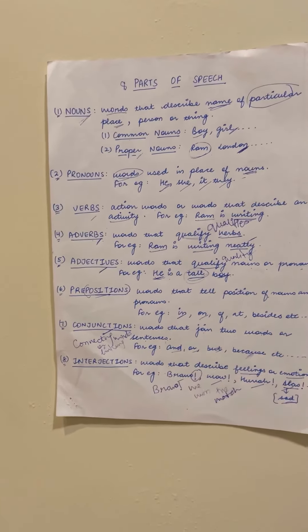Next हमारा verbs. Verbs क्या होते हैं? Action words होते हैं, या फिर उन words को verbs बोलते हैं जो कि activity बताते हैं — words that describe an activity. जैसे कि Ram एक proper noun है, तो वो कौन सी activity कर रहा है? Writing — लिखने का। तो writing हमारा यहाँ पर क्या है? Verb.